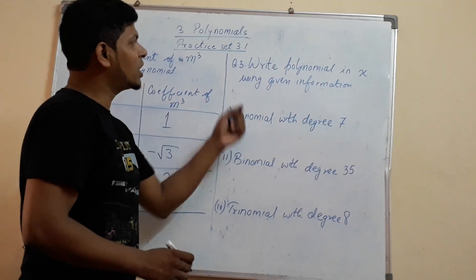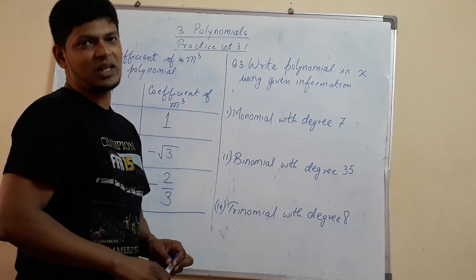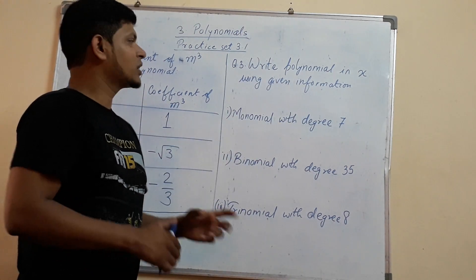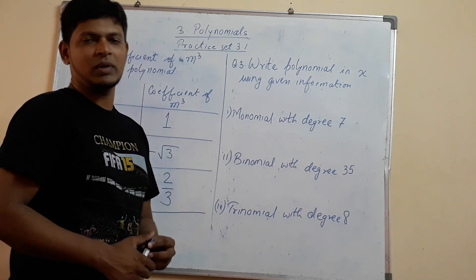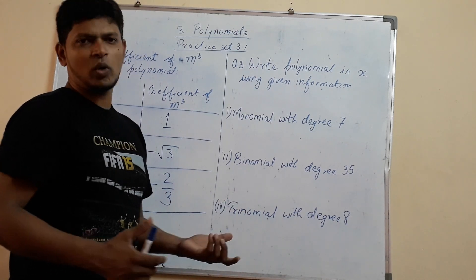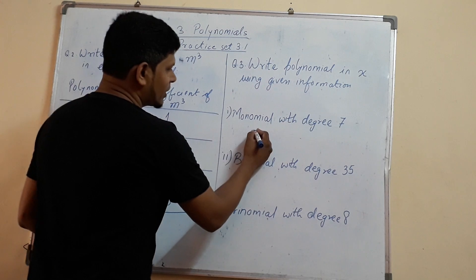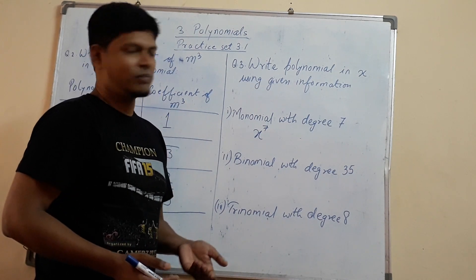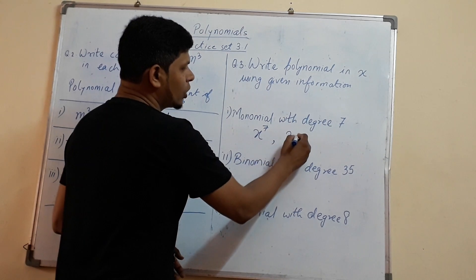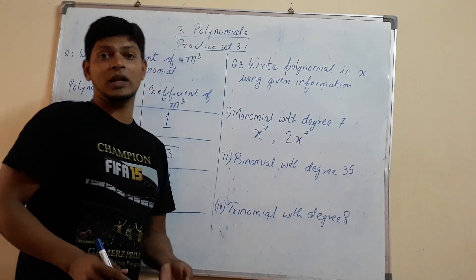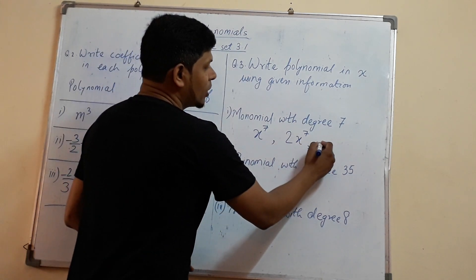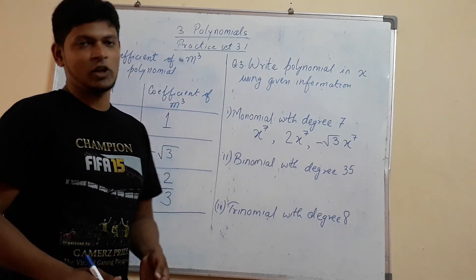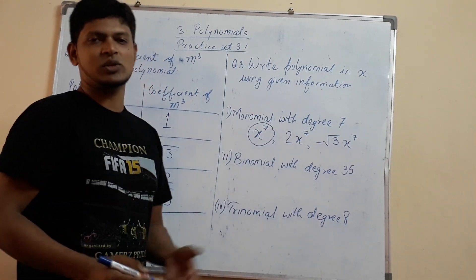Now let us do question number 3. Here we need to write the polynomial in x using the given information. We will form a polynomial and the variable will be x as per the given question. There is no single answer — there can be many answers, but in the examination we have to write one. First, a monomial with degree 7. We can write x raised to 7. We could also write 2x raised to 7 or minus root 3 x raised to 7. We take the simple example x raised to 7.